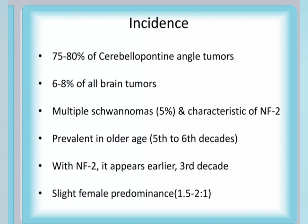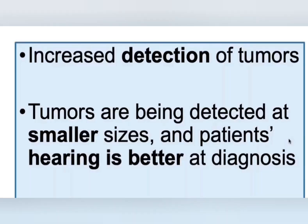Sometimes it is associated with neurofibromatosis 2, and in such a situation it comes earlier in life in the 3rd decade rather than the normal 5th to 6th decade of life for isolated tumours. We are now detecting tumours much earlier because of improved investigations such as MRI, so we are able to pick up the tumour at a smaller size where hearing is still better and serviceable.